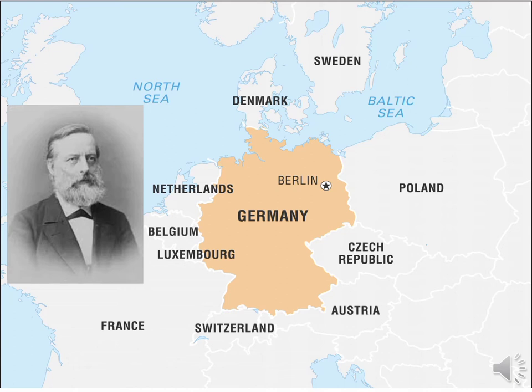Both scientists were teachers, living and working in different places. Meyer lived and worked in Germany, while Mendeleev in Russia.